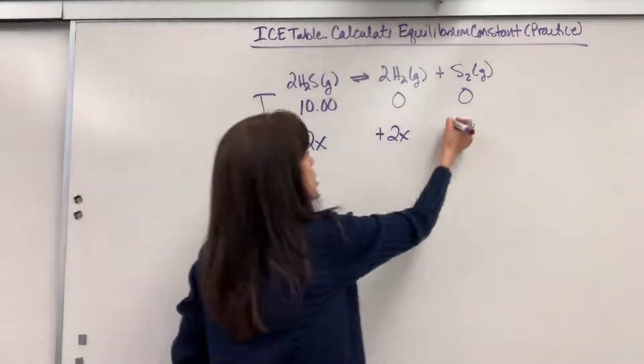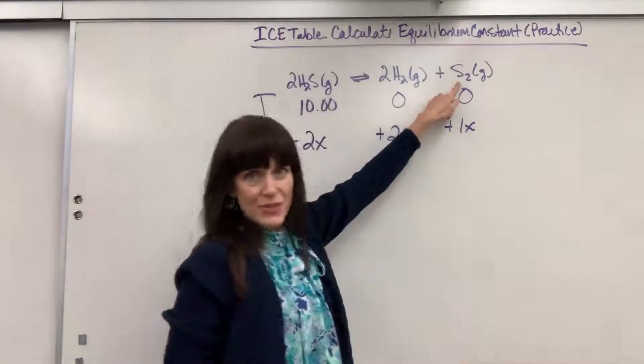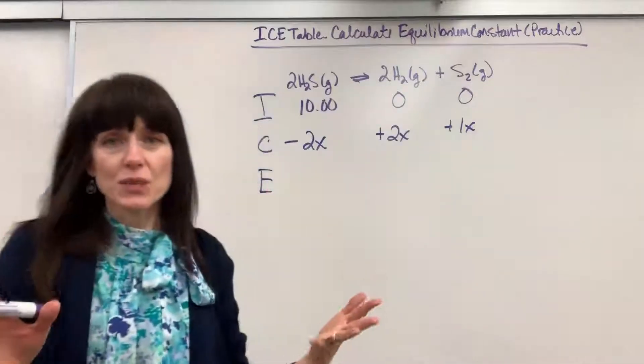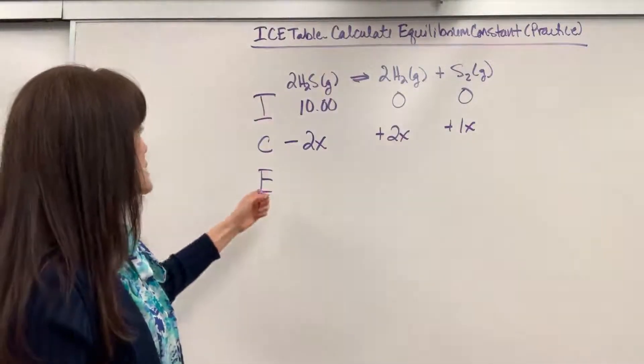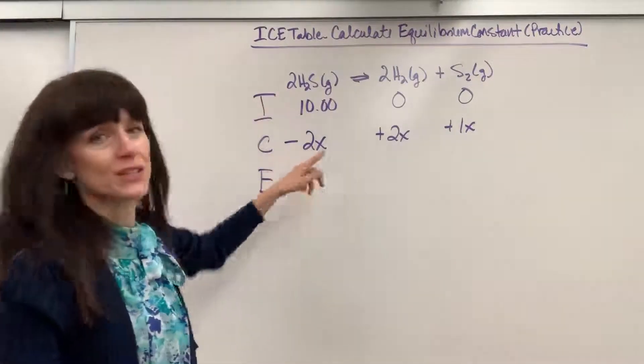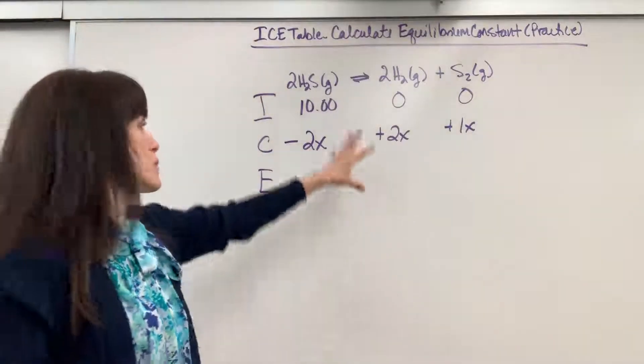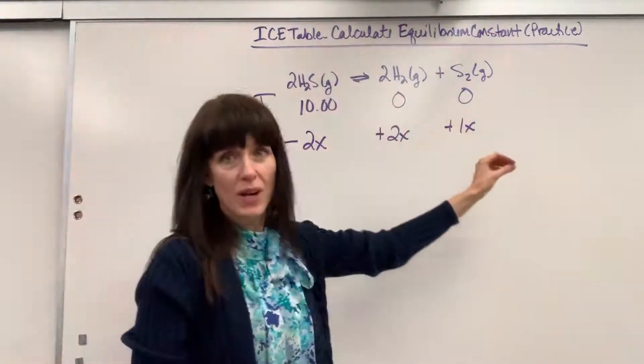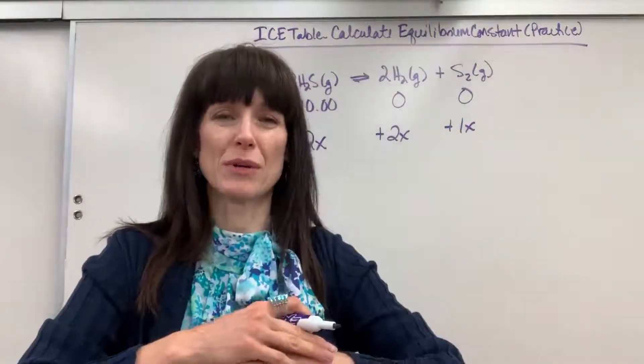So for every 2 moles that we lose of the reactant, we're going to gain plus 2 moles of the hydrogen gas plus 1 mole of the S2. So again, the easy way to do that change is you look at the coefficient and then just put the x next to it.